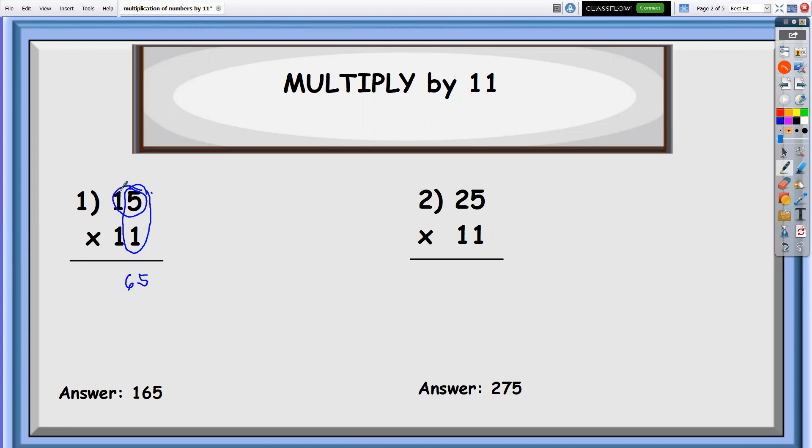And multiply now the first digits. So we have one times one, it's one. Therefore, the answer there is 165, and we got the same answer here.